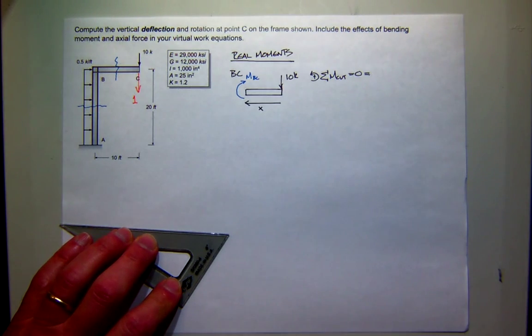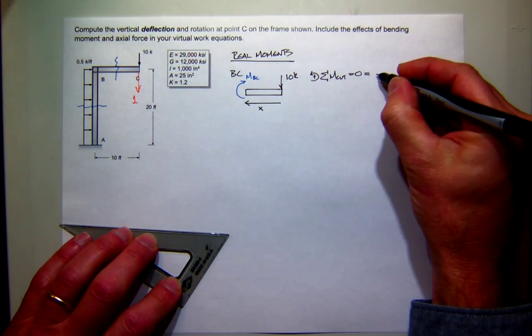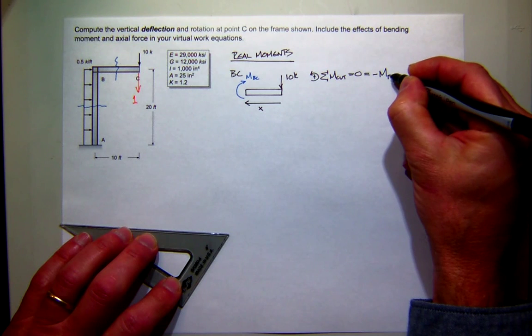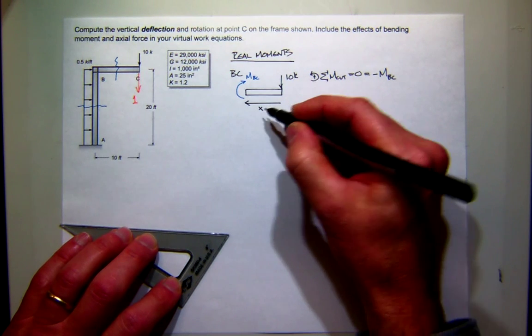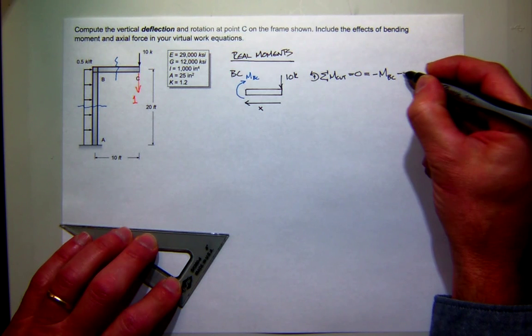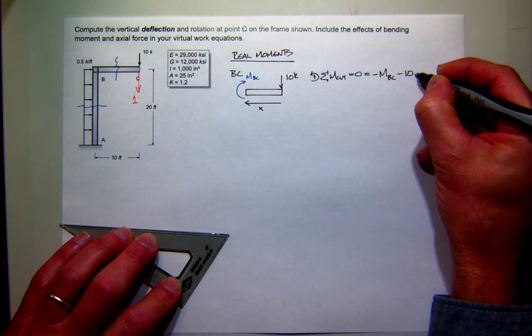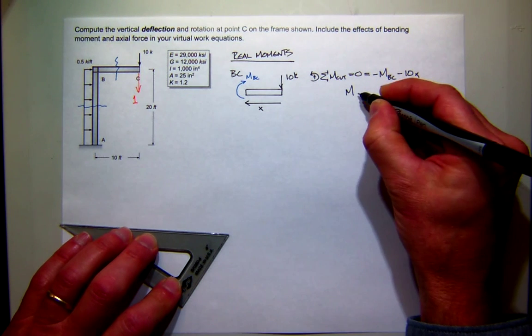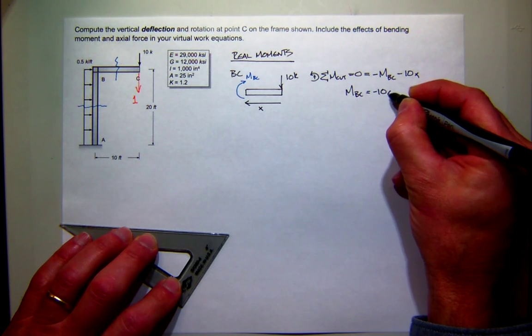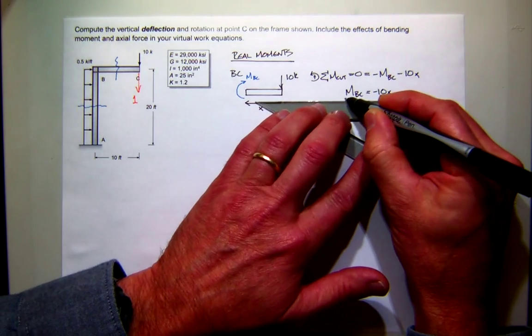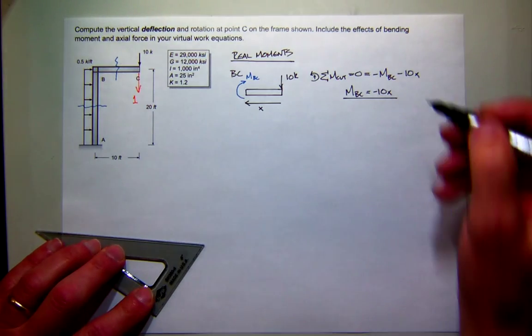All I have to do now is sum the moments at that cut section. My moment BC is positive or negative? Negative. And then the moment caused by the 10-kip force at a distance of x is positive or negative? Negative. So it's pretty easy to see that the real moment in BC is just negative 10x. That wasn't so bad.